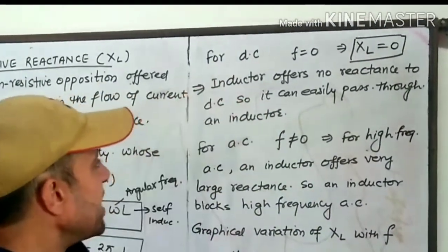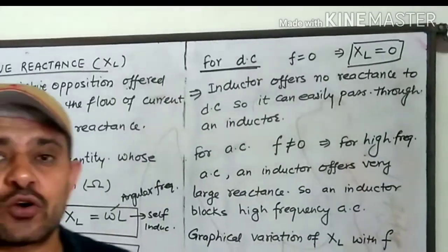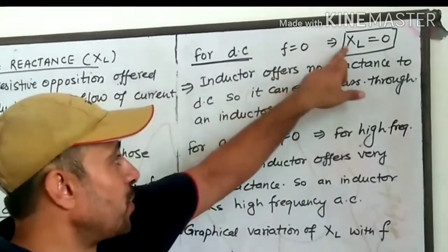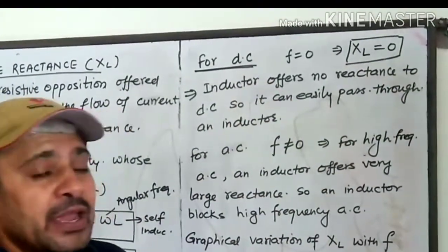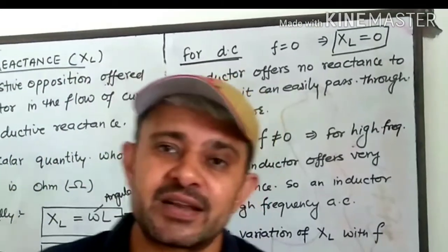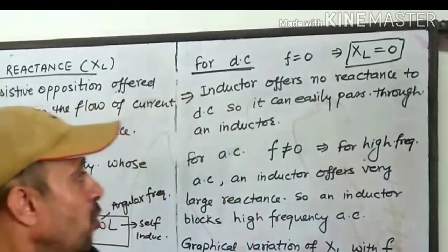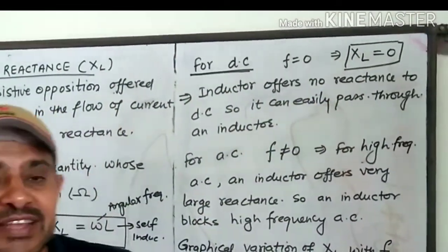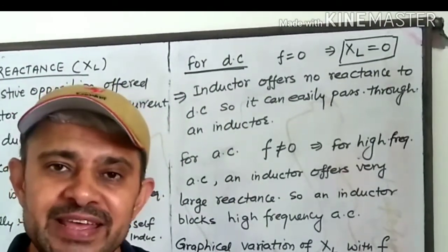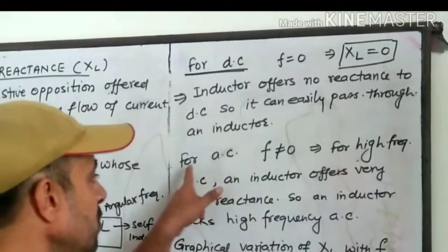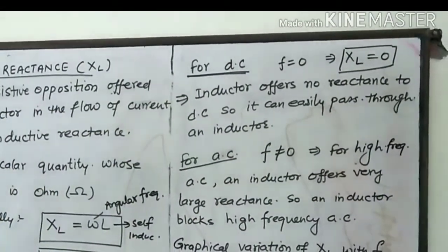For DC, the frequency of DC is zero, and since frequency of DC is zero, XL will be zero because XL is directly proportional to f. XL equals zero means the inductor offers no opposition in the flow of DC — the inductor offers no reactance to DC, and hence DC passes through the inductor very easily.